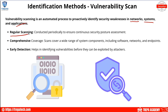Regular scanning is conducted periodically to ensure continuous security posture assessment. Comprehensive scanning covers a wide range of system components, including software, networks, and endpoints — like a credentialed scan that goes into your endpoints, your network, and your software with elevated privileges, which also allows you to look at third-party applications. Vulnerability scanning can also help with early detection — for example, identifying an open port or an unapplied patch that hasn't been exploited yet, so you can go ahead and patch it up.